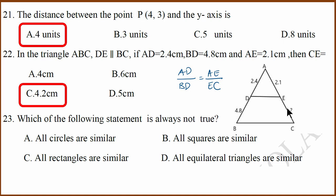23rd question. Which of the following statement is always not true? All circles are similar. Yes, similar. All squares are similar. Yes, all squares are also similar. All equilateral triangles are similar. Yes, they are also similar because internal angles are the same. All rectangles are not similar. Triangle, square, equilateral triangle, and circles are similar.